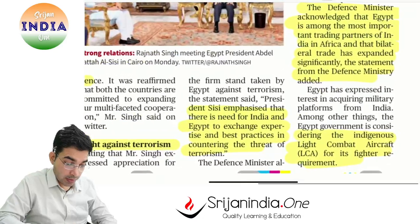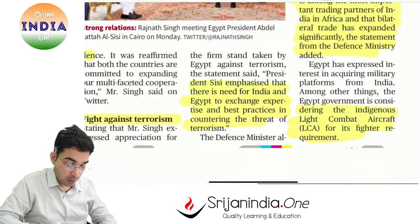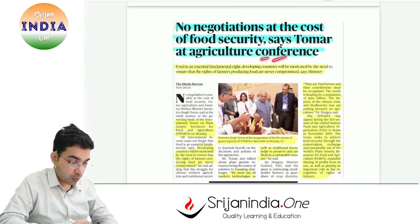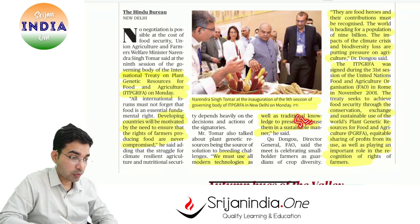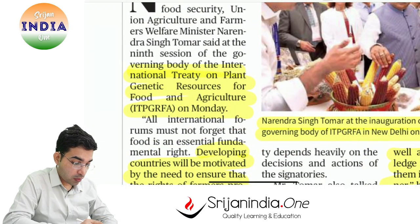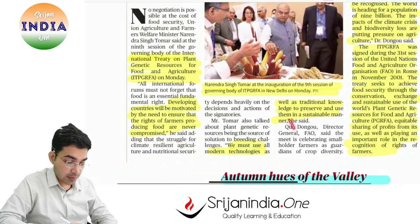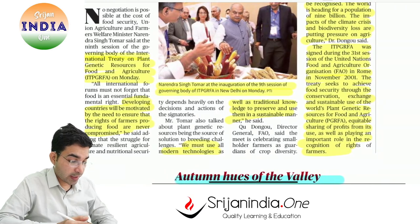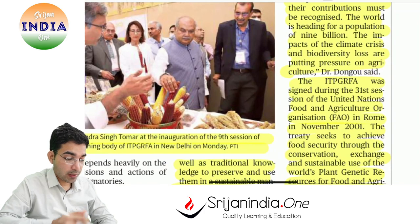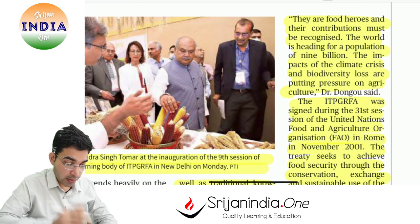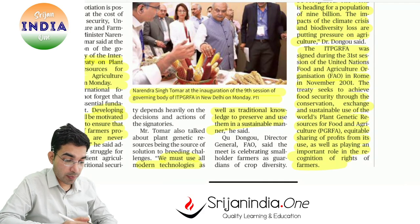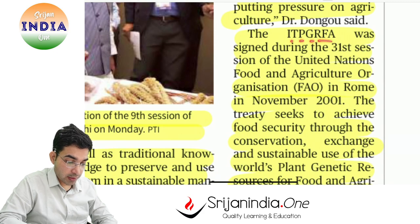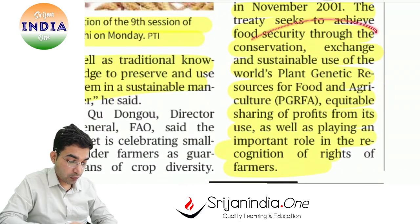Egypt important partner hai India ka — defense mein relations aur strong hone waale hain, aur hum LCA Tejas bhi yahaan pe outsource karenge. Then: no negotiations at the cost of food security — agriculture minister ne bataya. Once upon a time we were a ship-to-mouth country, then we got independent, after the green revolution. Yahan baat hai jo international treaty hai on plant genetic resources for food and agriculture. BT cotton — Bacillus thuringiensis — genetic modification is required at times so that hum better food yield kar paayein, climate-resilient agriculture ki taraf aage badhe. But at the same time yeh environment-friendly bhi hona chahiye aur ecology ko damage na kare. This was signed at ITPGRFA 31st session, United Nations FAO, Rome, 2001. Food security is very important, conservation and sustainable use of genetic resources is very very important.